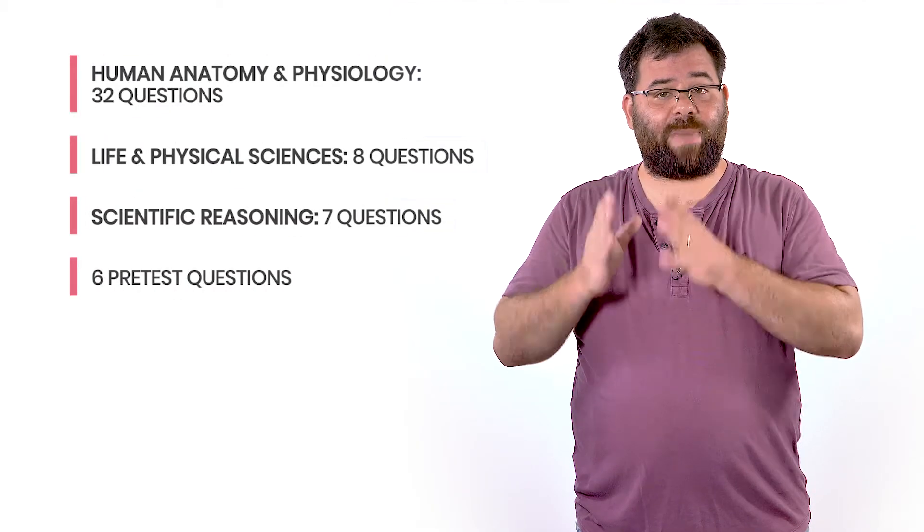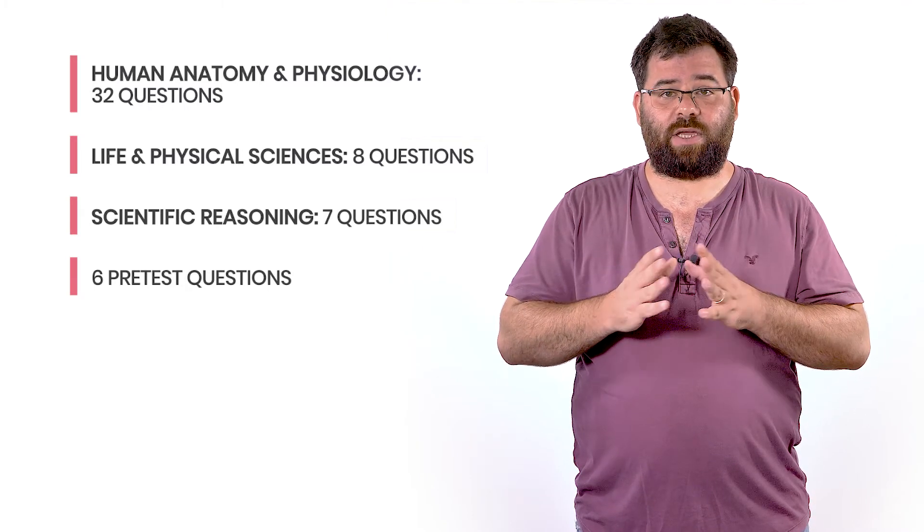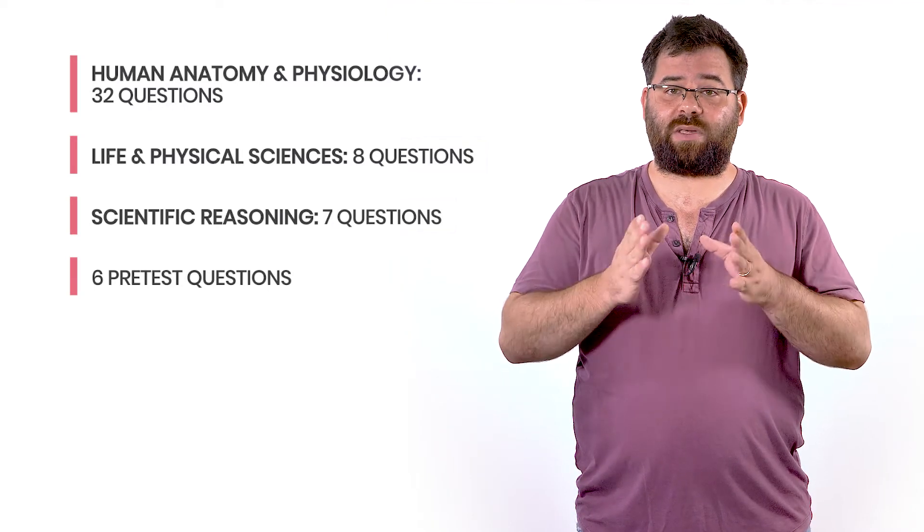The next section is the science section, which has 53 questions to be completed in 63 minutes. This is one of the larger topics on the TEAS, in terms of information tested, and it requires a lot of memorization. It covers three topics with an emphasis on human anatomy and physiology. Here are two tips to keep in mind for the science section.